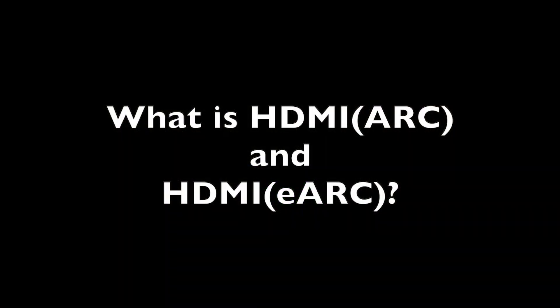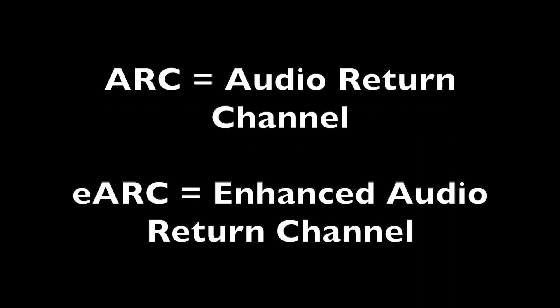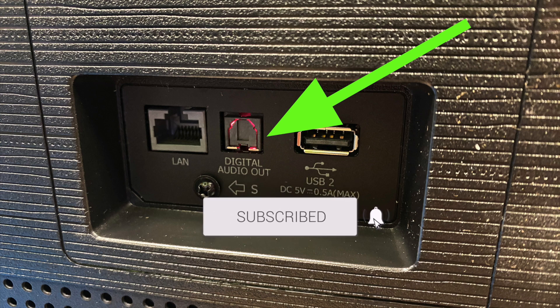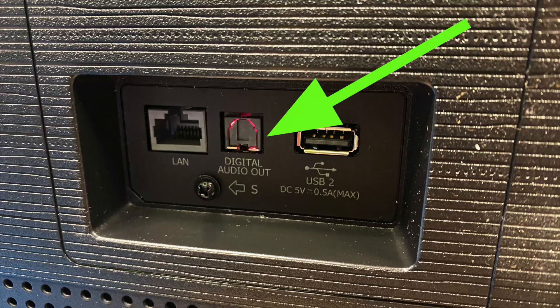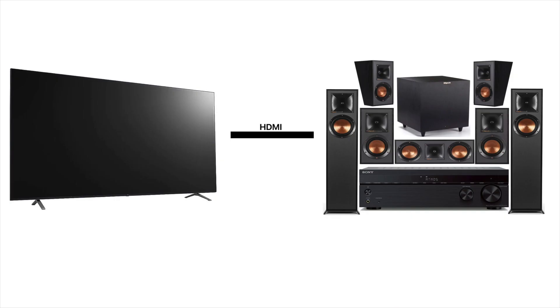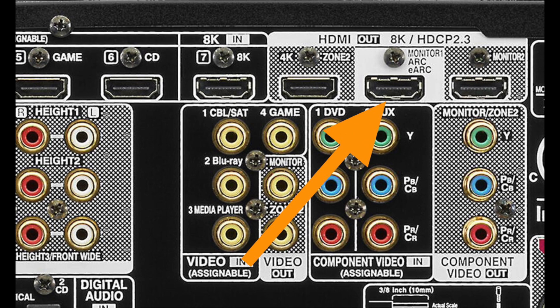So what does ARC and eARC stand for and what does it do? ARC stands for Audio Return Channel and eARC is Enhanced Audio Return Channel. This technology replaces the older optical audio connection. We know that HDMI cables send audio and video signals but only in one direction. ARC allows your TV to simultaneously send audio and receive video through a single HDMI cable, as long as both devices have an ARC or eARC HDMI jack.